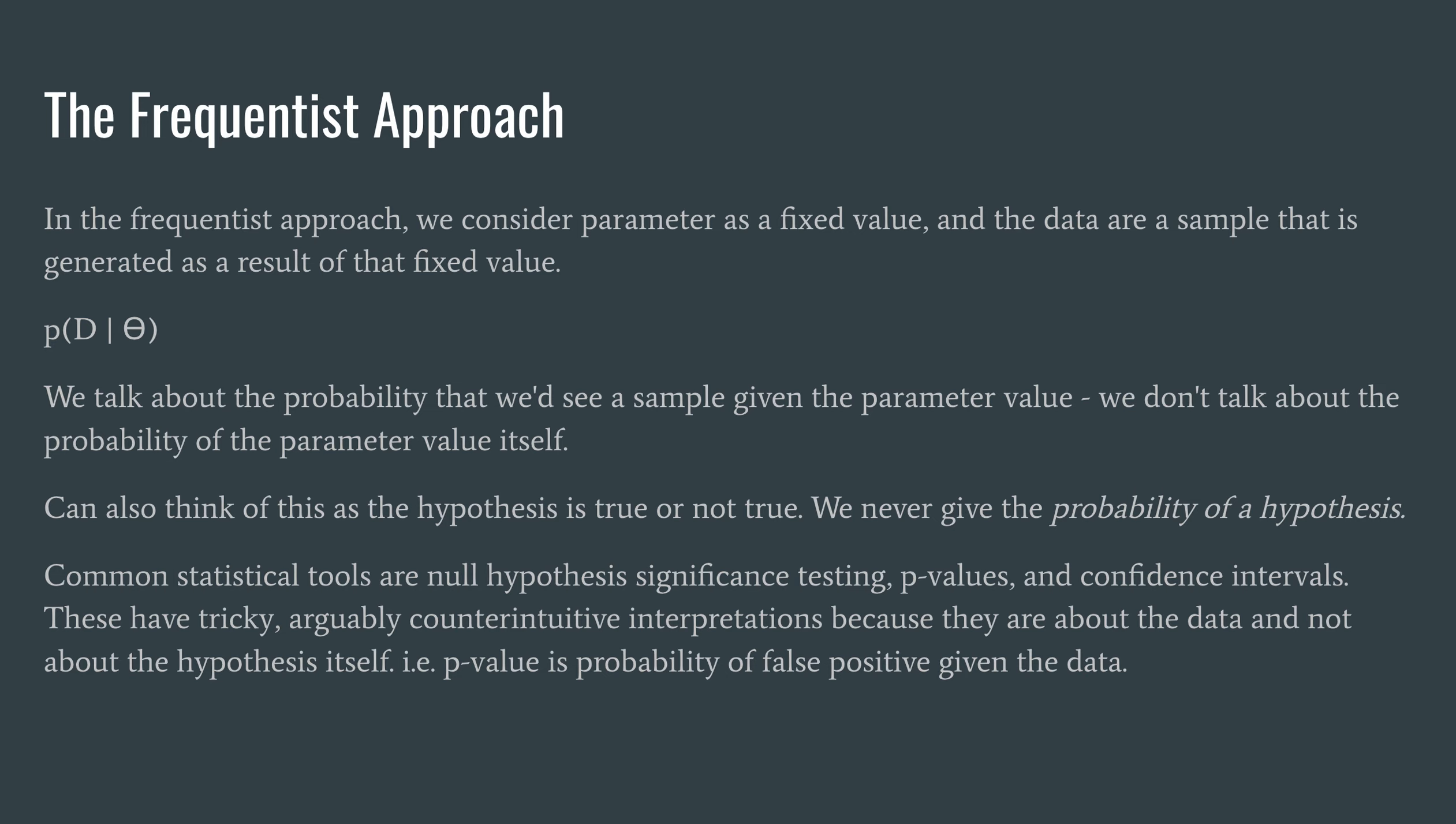And the common tools that we use in the frequentist approach are null hypothesis significance testing, p-values, and confidence intervals. And I'll argue through an example in the upcoming slides that these tools have tricky, sometimes counterintuitive interpretations because they are about the data and not about the hypothesis itself. For example, the p-value is interpreted as a probability of a false positive given the data.